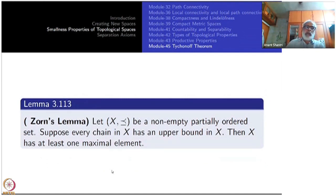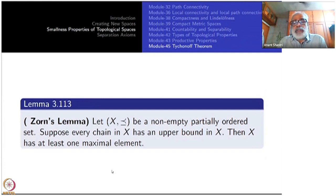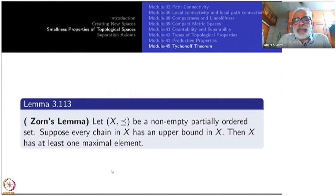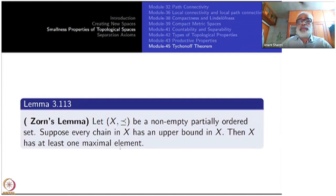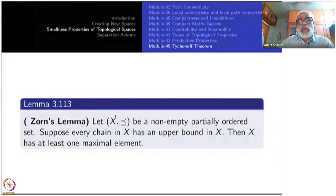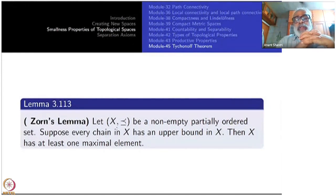Here is Zorn's Lemma, which is equivalent to the Axiom of Choice. It says: start with any non-empty partially ordered set. Suppose every chain in X has an upper bound. Then X has at least one maximal element — uniqueness is not claimed. Next time we shall use Zorn's Lemma very effectively to prove Alexander's Subbase Theorem. Thank you.